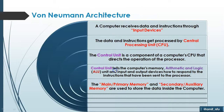A computer receives data or instructions through input devices like keyboard and mouse. The data and instructions — instructions meaning commands — get processed by the CPU. The CPU consists of the control unit, which is the main part, the heart of the computer. The control unit is the component of the CPU which directs the operation of the processor.